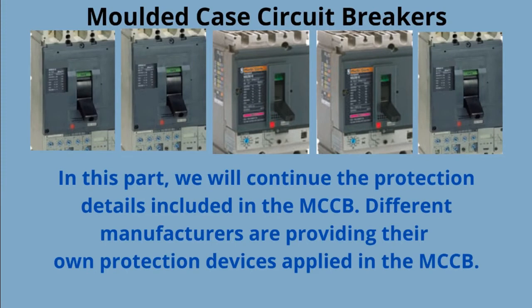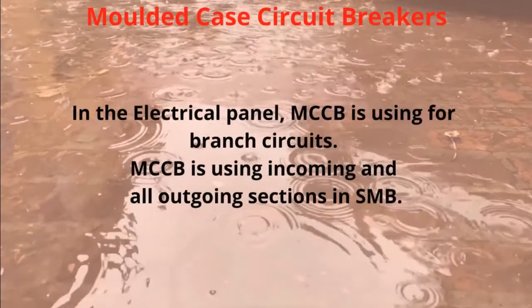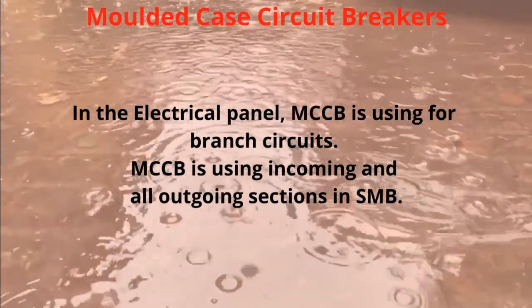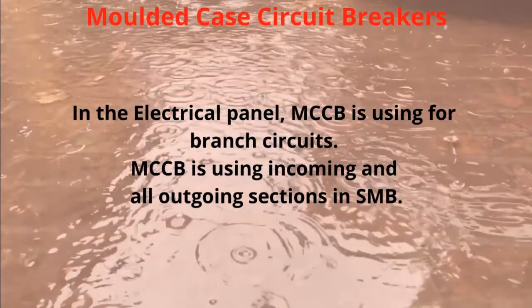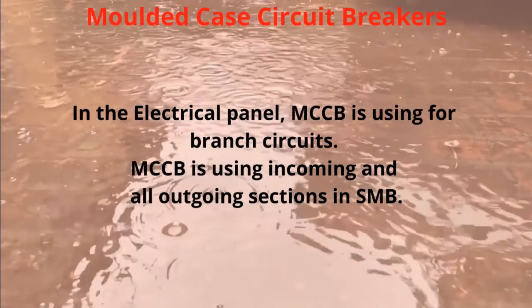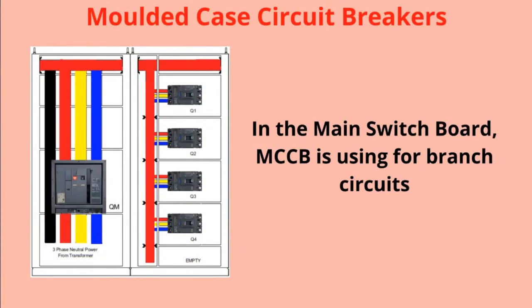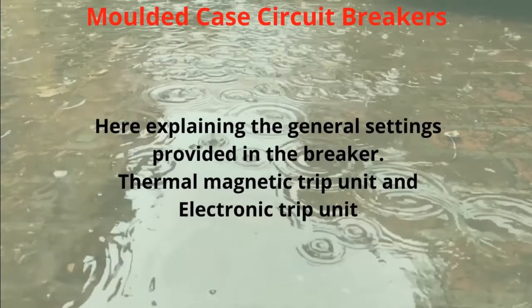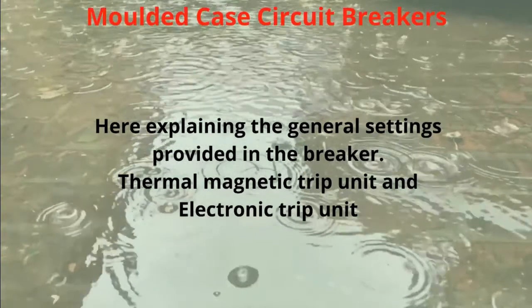In this part, we will continue the protection details included in the MCCB. Different manufacturers are providing their own protection devices applied in the MCCB. In the electrical panel, MCCB is used for branch circuits, as well as for incoming and all outgoing sections in the SMB. Here we explain the general settings provided in the breaker.